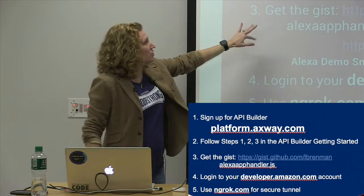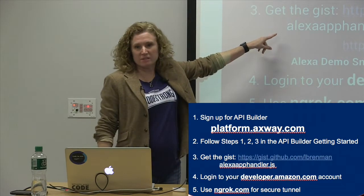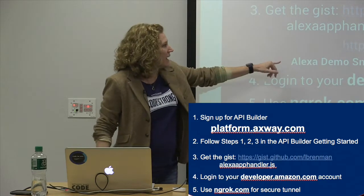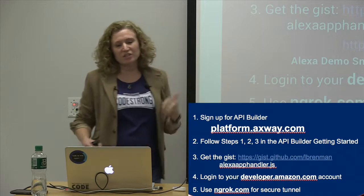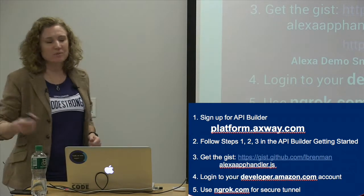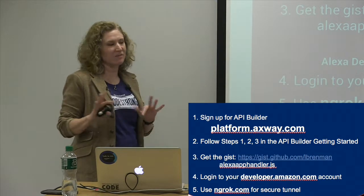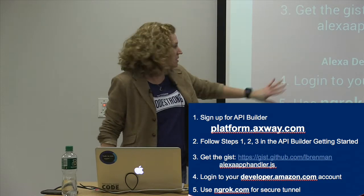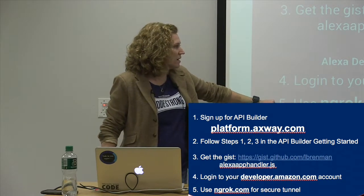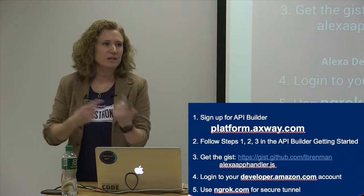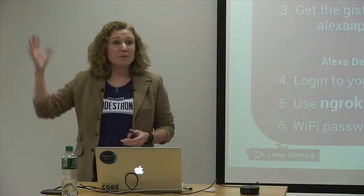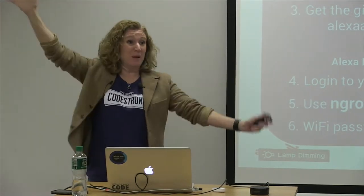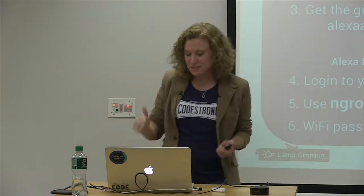We're going to leverage these two gists. The best thing is to copy this gist and download this file to your system because we're going to be putting it in a directory. This is my cheat sheet of cut and paste so that we don't have to code everything. We're going to be leveraging your developer.amazon account, and we're going to use ngrok for secure tunneling so we can leverage stuff off our laptop. How many here have actually built an Alexa skill? No one. How many here want to build one? So we're going to build one.